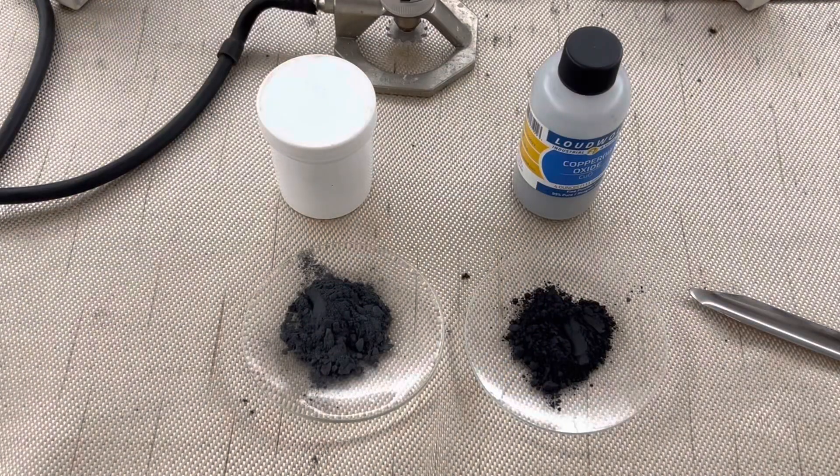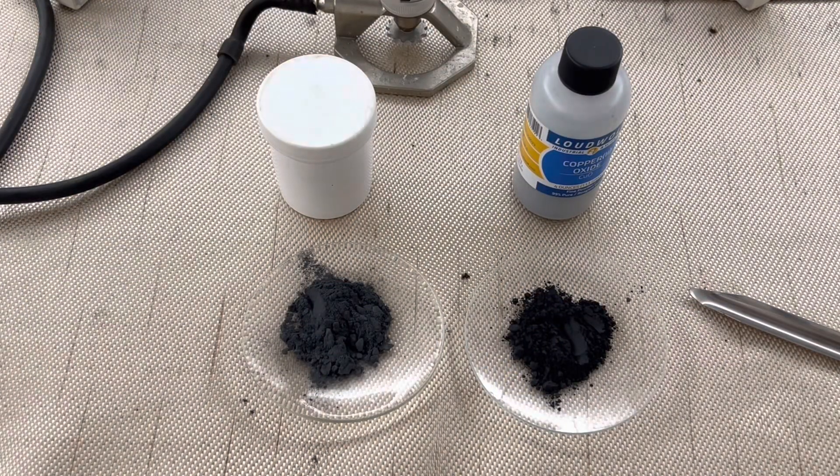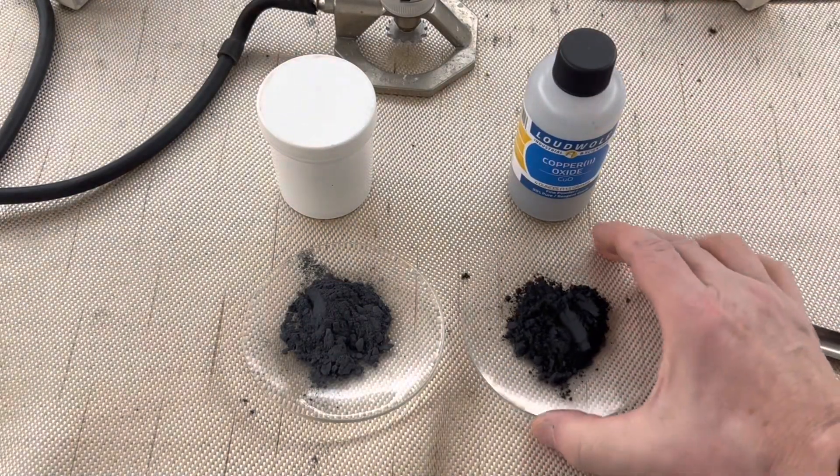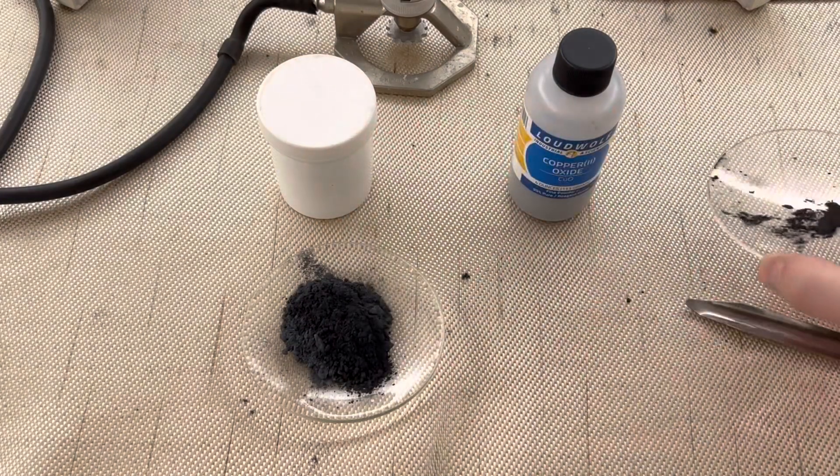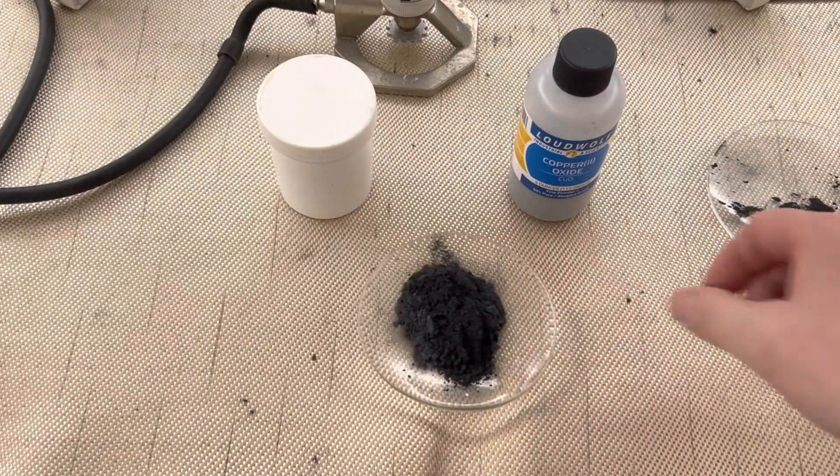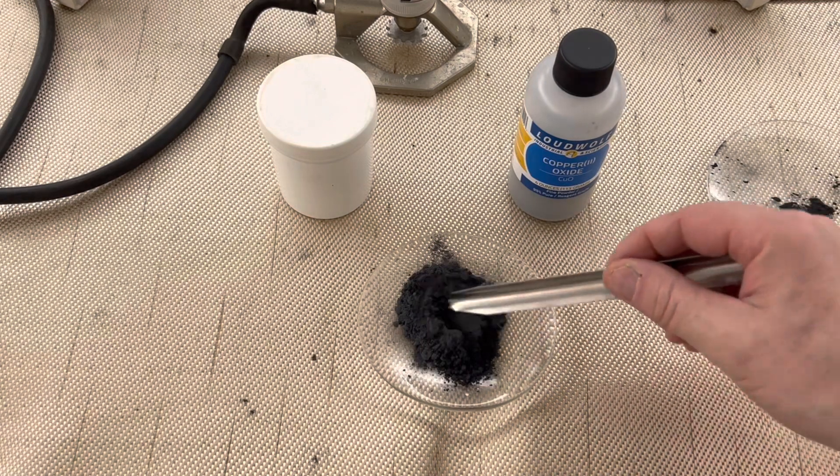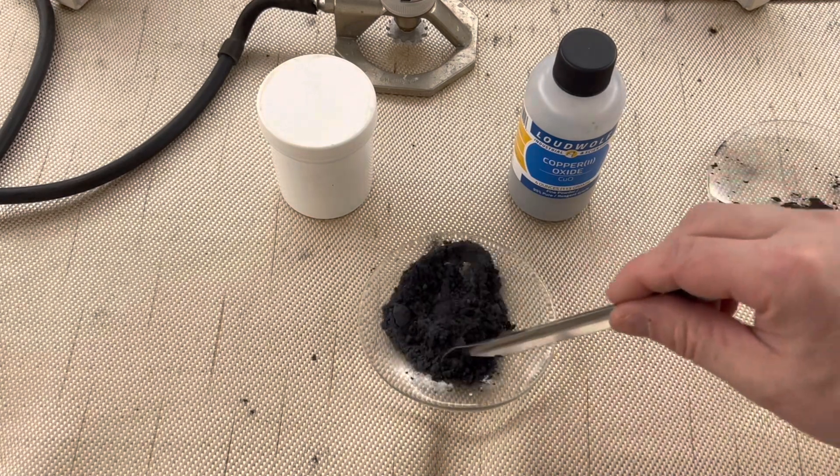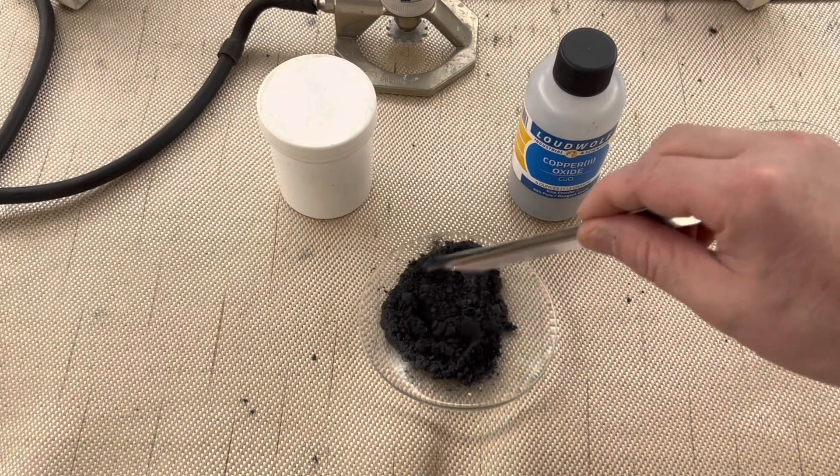Begin by adding an equal portion of magnesium powder and copper 2 oxide. When you mix these together, make sure you do so gently. Be careful not to grind these in a mortar and pestle, but simply stir them back and forth until you have a homogenized mixture.